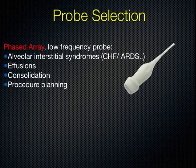There are two different probes we can use when looking at the lungs. The first is the phased array low-frequency probe, some people call it the cardiac probe. It's a low-frequency probe which gives you a high degree of penetration but not a great deal of resolution. This is best when we are looking at pulmonary edema, deeper effusions, consolidations, and also surveying the landscape for potential procedure planning such as thoracentesis.